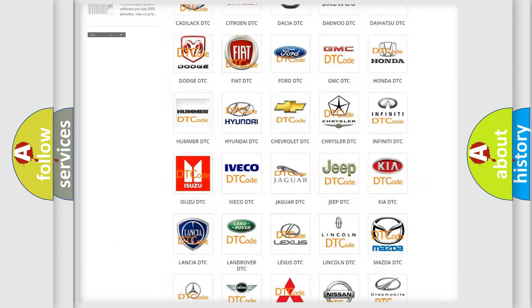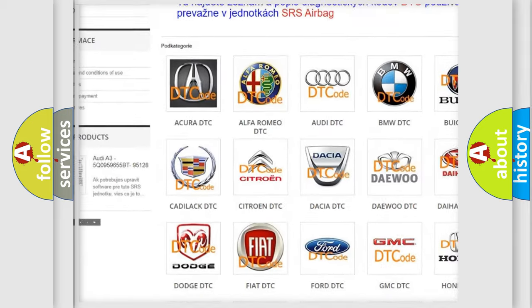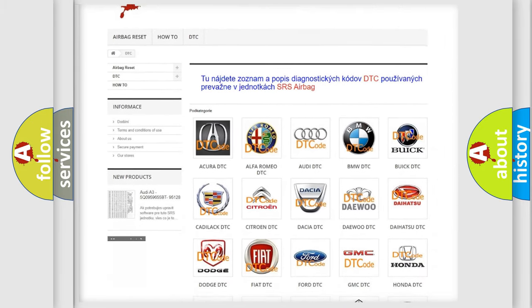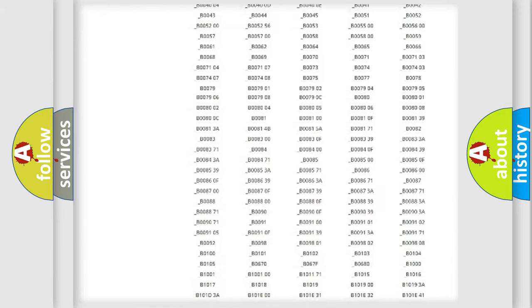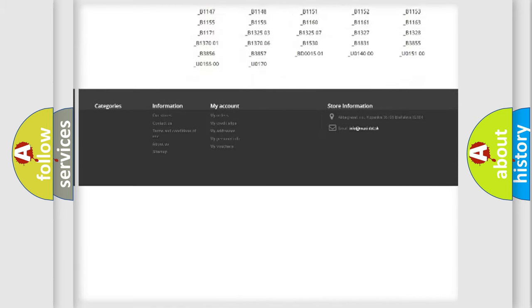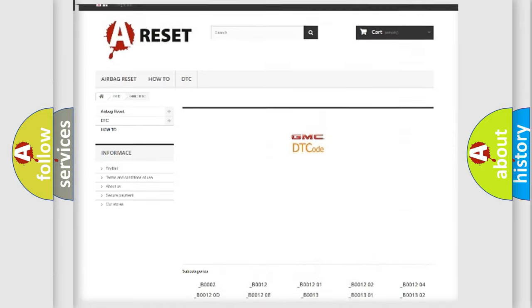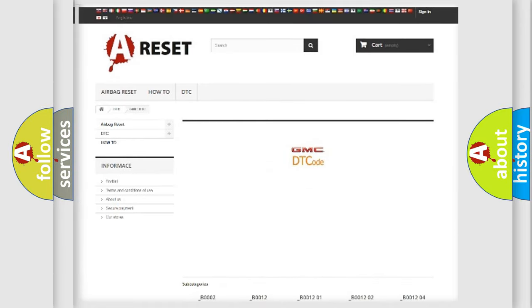Our website airbagreset.sk produces useful videos for you. You do not have to go through the OBD2 protocol anymore to know how to troubleshoot any car breakdown. You will find all the diagnostic codes that can be diagnosed in GMC vehicles, and also many other useful things.